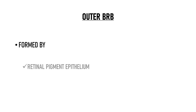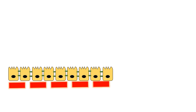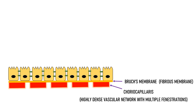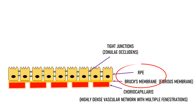Let's talk about the outer blood retinal barrier now. The outer blood retinal barrier is mainly formed by the retinal pigment epithelium. The other component is Bruch's membrane. The choroid is located between the sclera and the retina and contains the choriocapillaris, which is a highly dense vascular network with multiple fenestrations that supplies nutrients to the outer retina and removes waste materials. The innermost layer of the choroid is Bruch's membrane, a fibrous membrane mainly composed of collagen. Internal to it is the RPE, or retinal pigment epithelium, which is the outermost layer of the retina. These RPE cells are joined together by tight junctions known as zonula occludens. Thus, the RPE cells and Bruch's membrane together form the outer blood retinal barrier, separating the choriocapillaris from the retina.